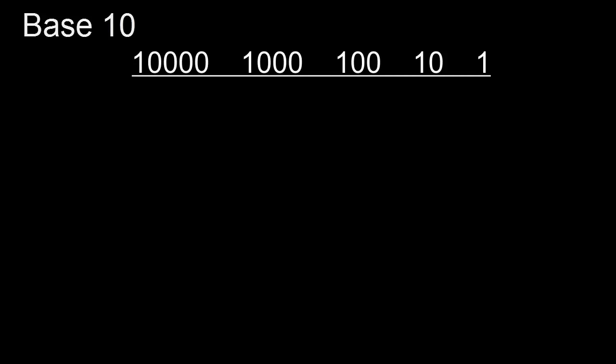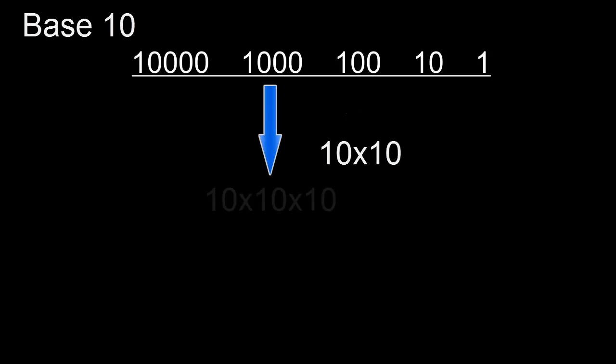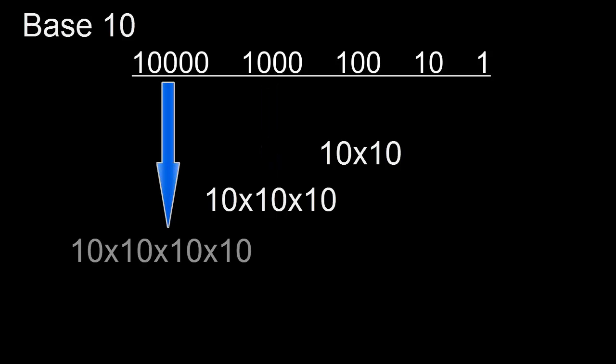In our base ten system, these are our groups. From the far right we just have singles, then groups of ten, groups of a hundred — and a hundred is, of course, ten times ten. Then we have groups of a thousand: ten times ten times ten. And ten thousand is groups of ten times ten times ten times ten. We could carry on to the left; every time we need a bigger group, we just multiply by ten.